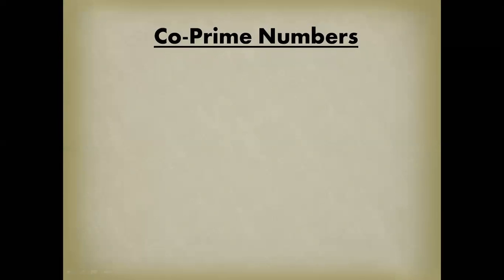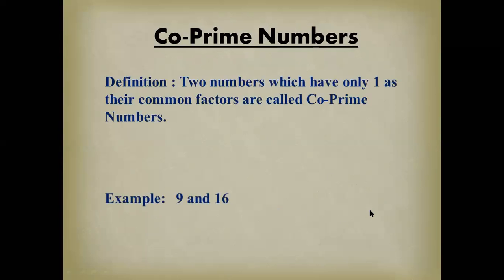First we will learn about co-prime numbers — their definitions and example questions. After solving all the co-prime number questions, we will move to prime numbers. So what are co-prime numbers? Two numbers which have only one as a common factor are called co-prime numbers.